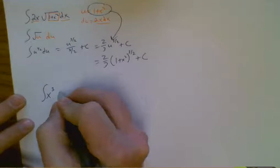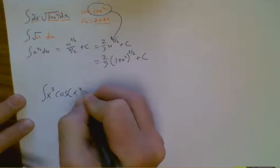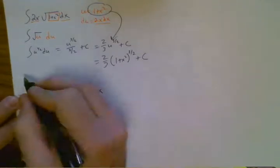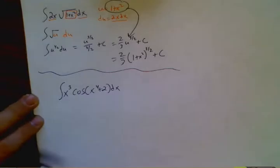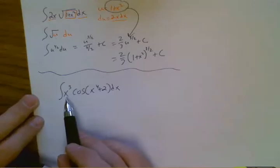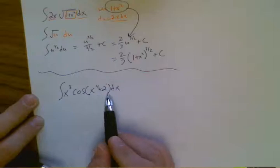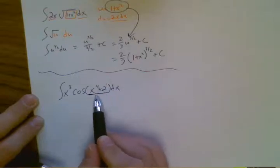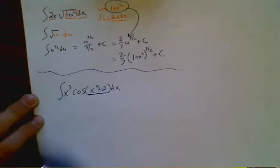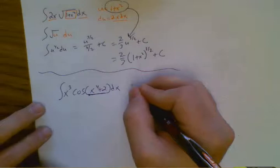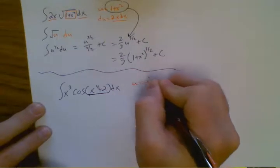x cubed cosine x to the 4th plus 2. Okay. Well, again, I'm looking at that. I'm like, okay, the x cubed isn't so great because it's being multiplied. But that's not causing the most trouble. The most trouble is this x to the 4th plus 2 hiding inside this cosine. Okay. So I'm going to let u equal x to the 4th plus 2.